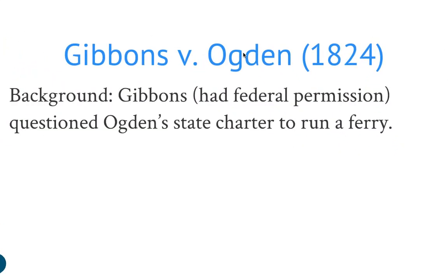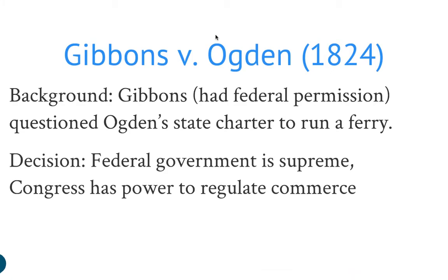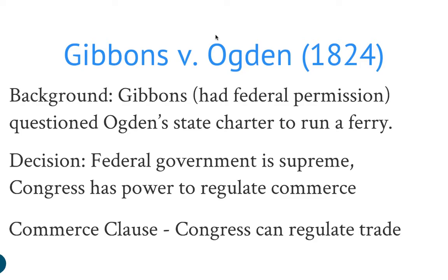Then you have Gibbons versus Ogden. Gibbons had federal permission to run a steamboat in the state of New York to ferry people across the Hudson River. Ogden had a state charter to run a ferry for the exact same thing. Ogden thought he had more power, but Gibbons sued him because he had federal permission. The decision was that the federal government is supreme and Congress has the power to regulate commerce, so Ogden's charter was not valid. Gibbons was the only person with the right to ferry, and that relates to the commerce clause.